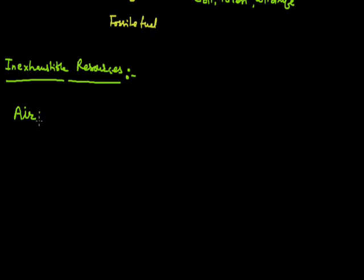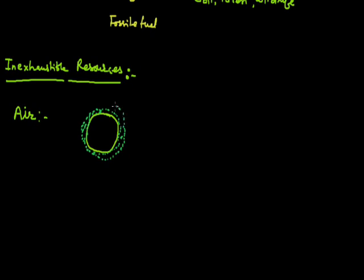First of all, we discuss about air. Air is present around the earth. This region having the air around it is known as the atmosphere around the earth. So this whole region containing the air, we call it atmosphere. The layer which is surrounding the earth, we call it the atmosphere.